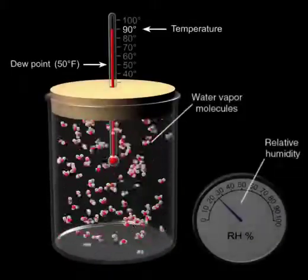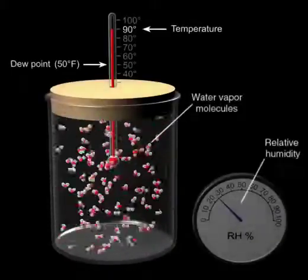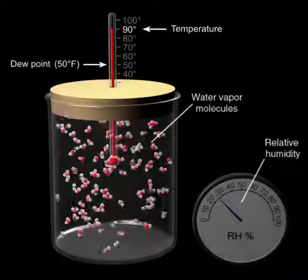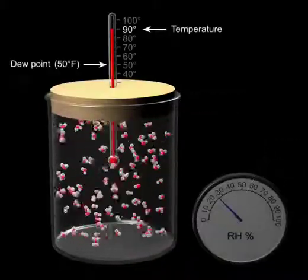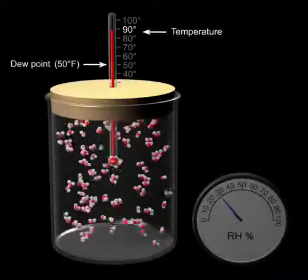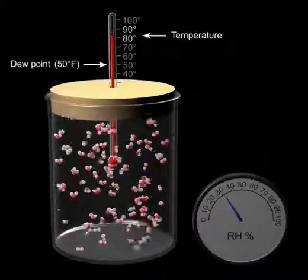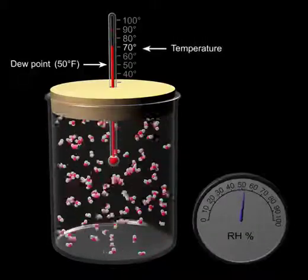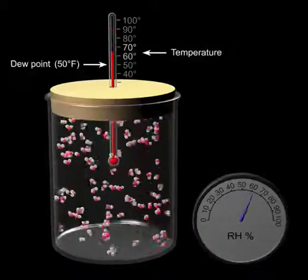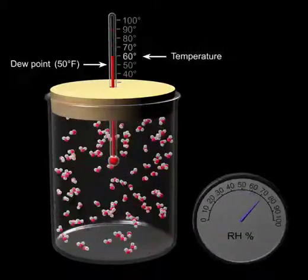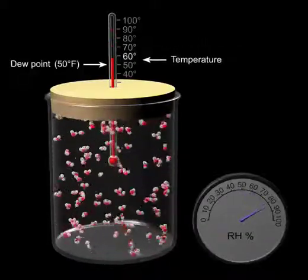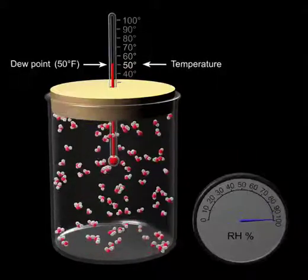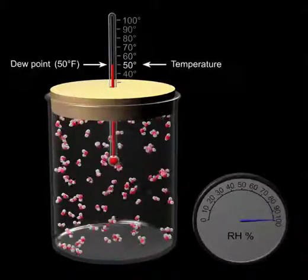As the temperature inside the jar approaches the dew point, the air is approaching saturation and the relative humidity of the air increases. When the air temperature reaches the dew point, the air is saturated and the relative humidity is 100%.